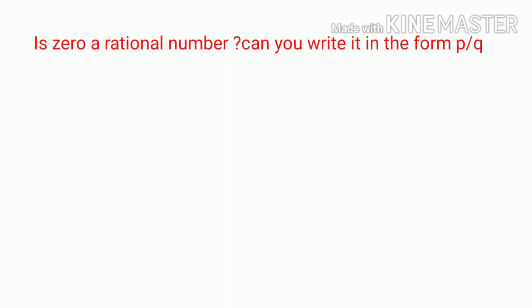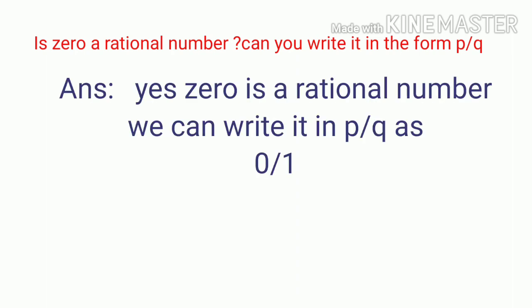Is zero a rational number? Can you write it in the form of P by Q? Yes, we can write it in P by Q form. Zero is a rational number — we can write it as 0 by 1.